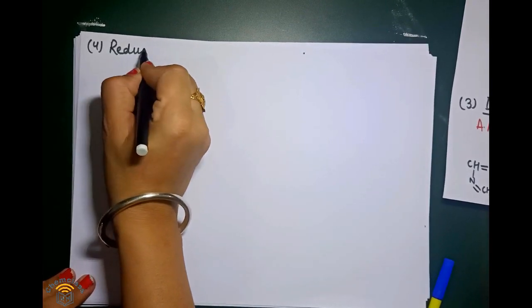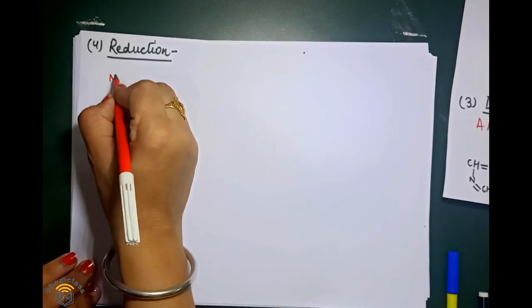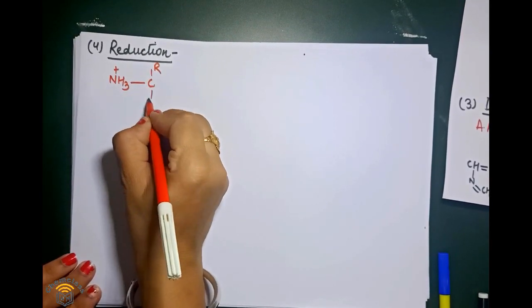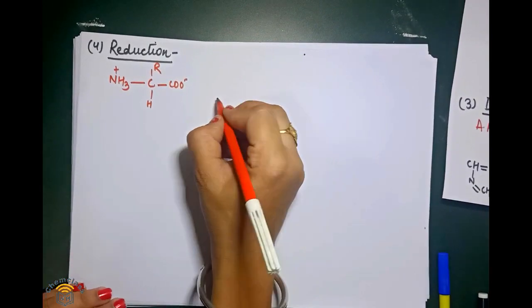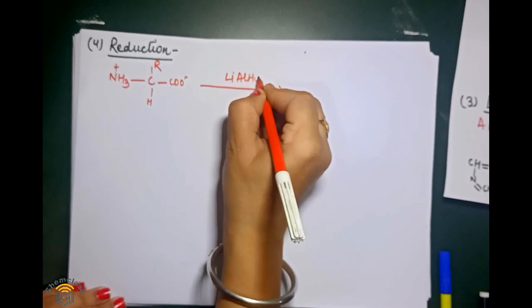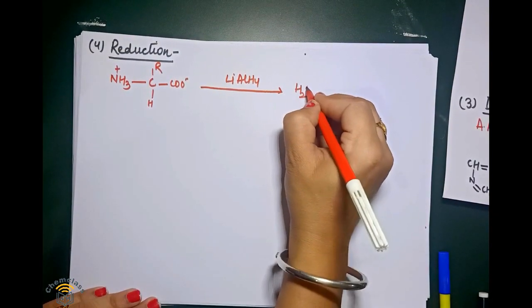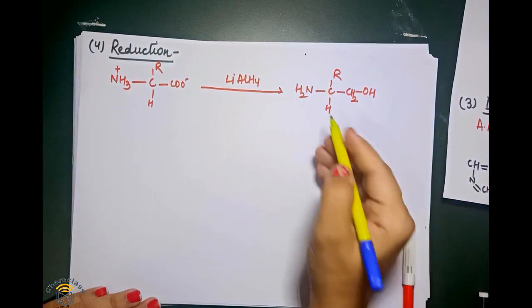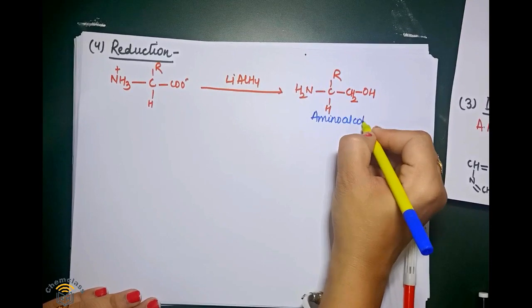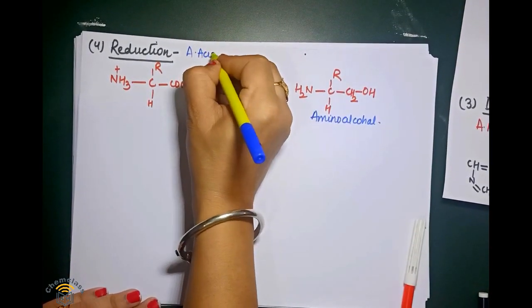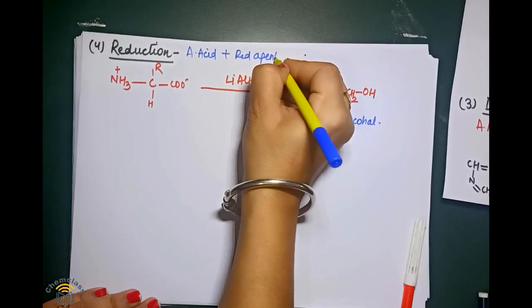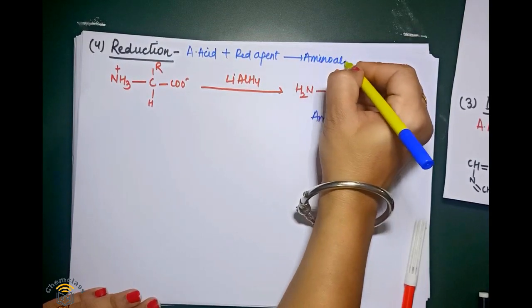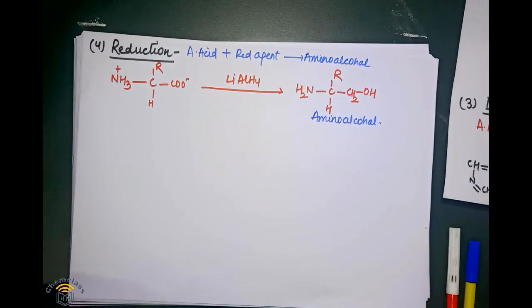The fourth reaction is reduction. You have to take the amino acid (NH3+ - CHR - COO-). Reduction means you take any reducing agent — suppose lithium aluminum hydride (LiAlH4). After the reduction reaction, we are getting an amino alcohol. So basically, take amino acid, add any reducing agent, and it gives us amino alcohol at the end of the reaction.